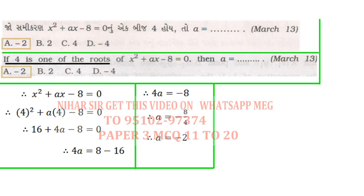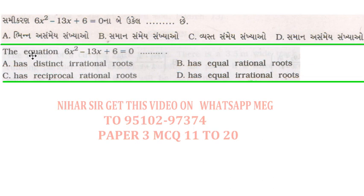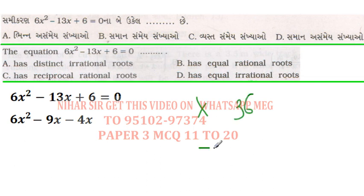Okay, the equation 6x² - 13x + 6 = 0, what kind of roots does it have? So 6x² minus 3x. Now I did this partition: multiply to get 36 and add to get minus 13. So I partitioned to fulfill these two conditions. Multiply to get 36 and add to get minus 13.